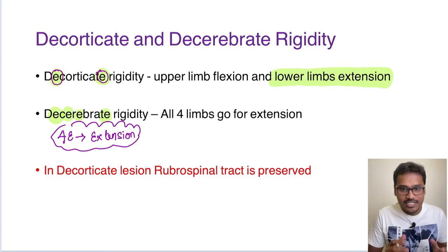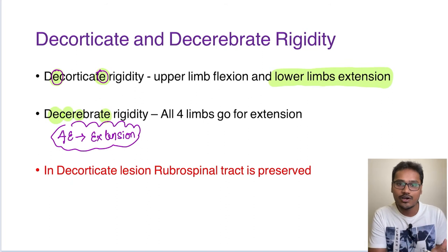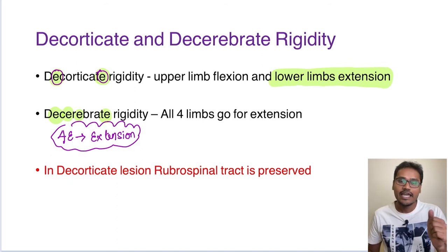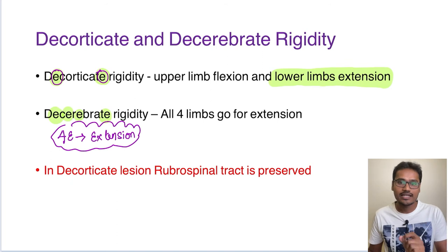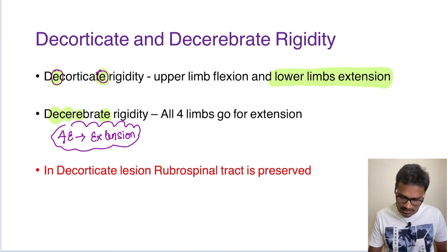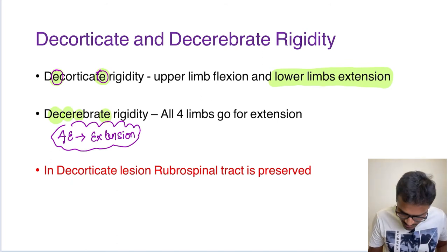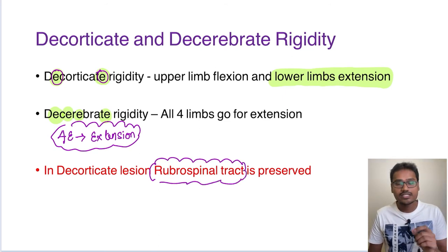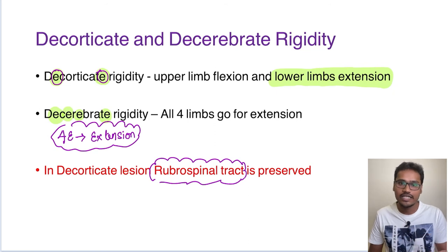What is the tract which makes the difference between decorticate and decerebrate rigidity? In decorticate rigidity, the rubrospinal tract is preserved — it is not cut. That is the difference responsible for the flexion of the upper limb in case of decorticate rigidity.